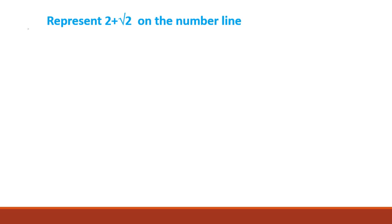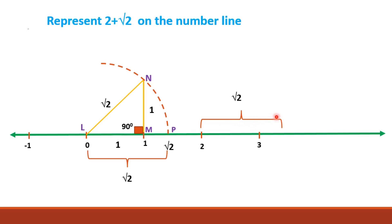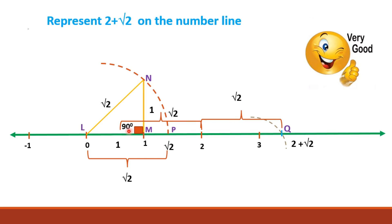To represent 2 plus square root of 2: since you already know how to represent square root of 2, mark that point on the number line, take that length with a compass, move to number 2 as the starting point, and mark that length to the right — that point represents 2 plus square root of 2. Similarly, for 2 minus square root of 2, mark the same length to the left of number 2.